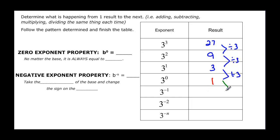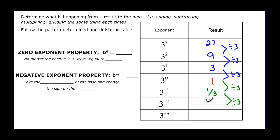Now if I divide by 3 again, I'm actually going to have 1 third. And if I divide by 3 again, I'm going to have 1 over 9.